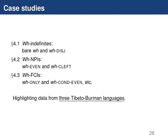That's the basic framework. For much of the rest of the talk, we'll be walking through case studies. There are three types: WH indefinites, WH NPIs, and WH free choice items. Along the way I'll be highlighting data from three Tibeto-Burman languages.